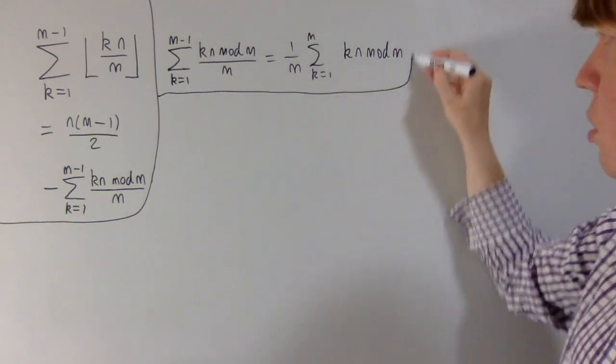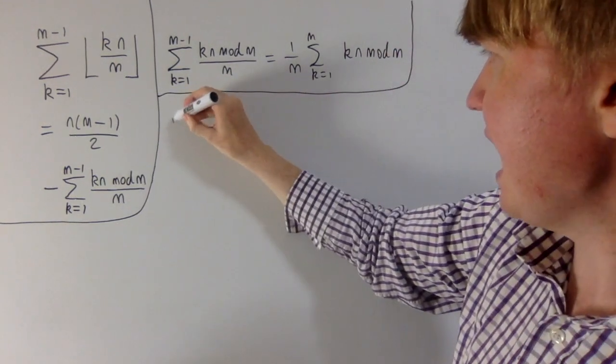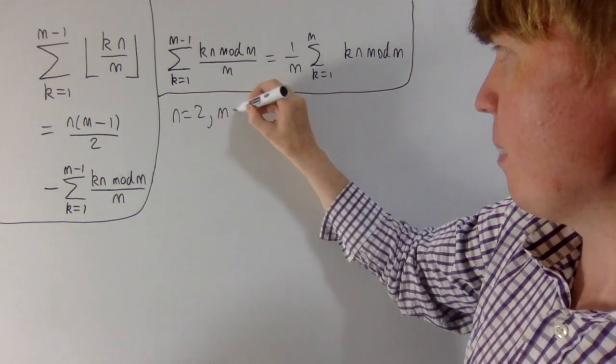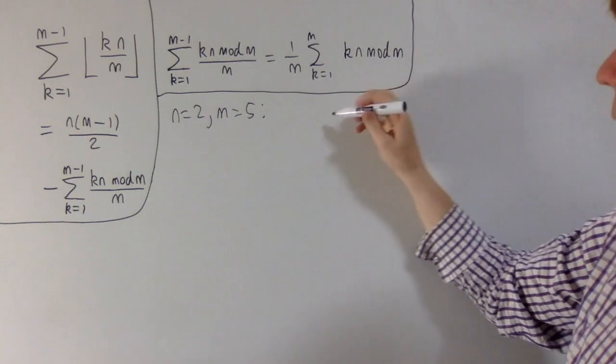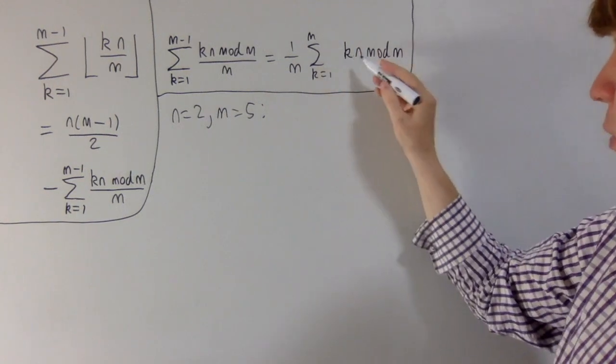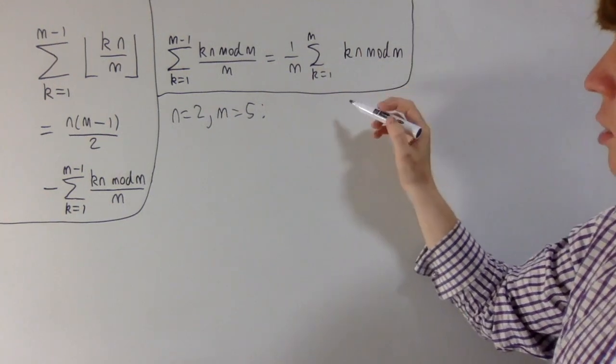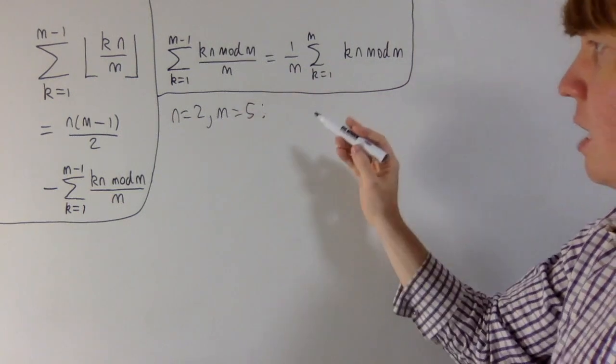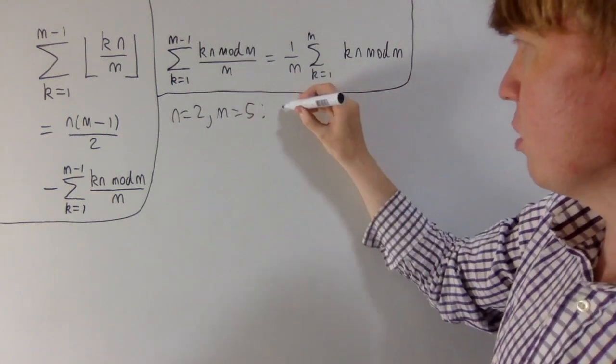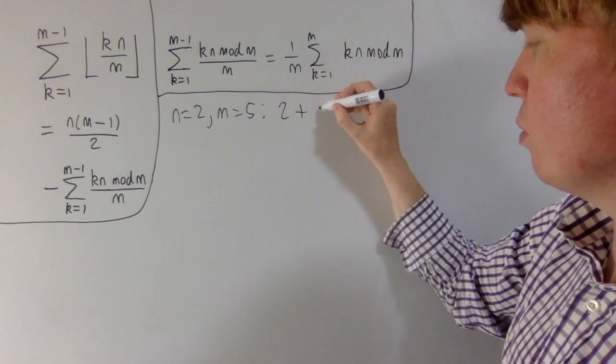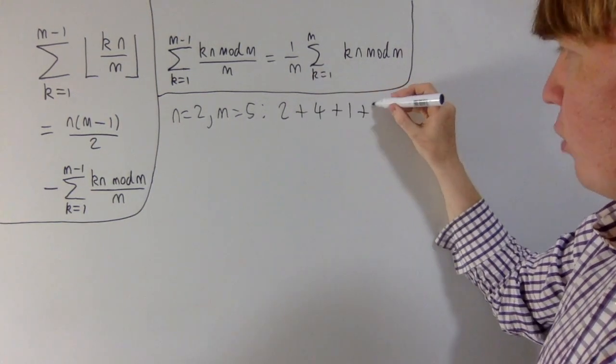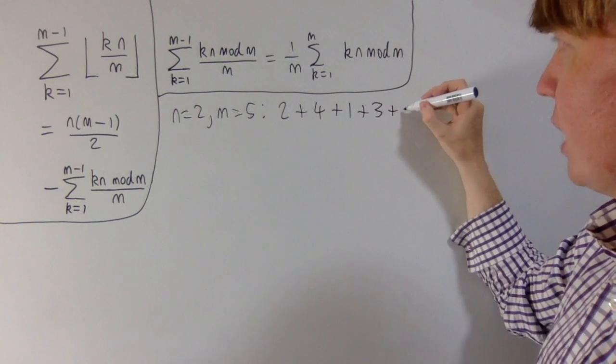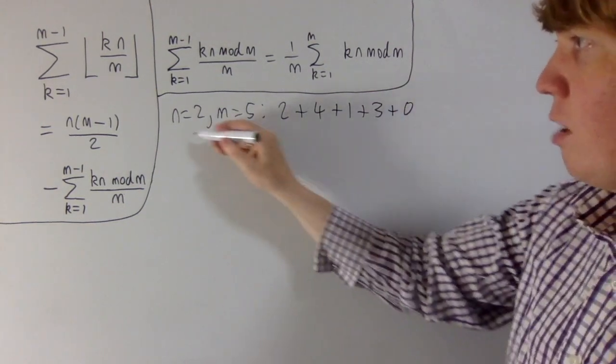So we'll look at an example. Let's say n equals 2 and m equals 5, just to understand what's going on with this sum. So the sum from k equals 1 to m of kn modulo m, we're now looking at the sum of basically our 2 times table modulo 5. So you start off with 2 mod 5 is 2, 4 mod 5 is 4, 6 mod 5 is 1, 8 mod 5 is 3, and finally 10 mod 5, our 0 term that we added in, is just 0.